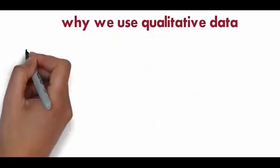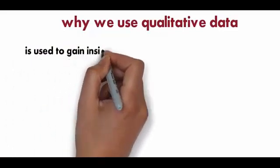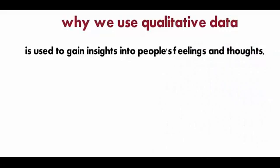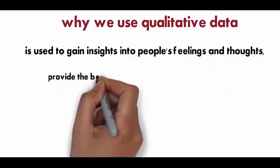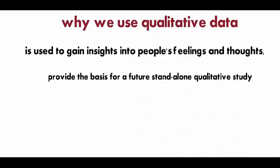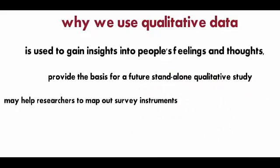Why we use qualitative data in research paper? Qualitative research is used to gain insights into people's feelings and thoughts, which may provide the basis for a future standalone qualitative study or may help researchers to map out survey instruments for use in a quantitative study.